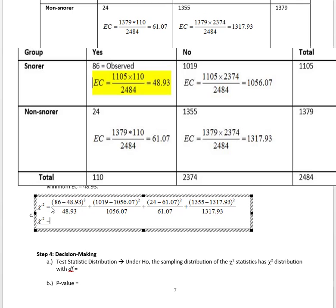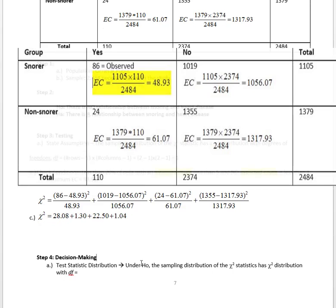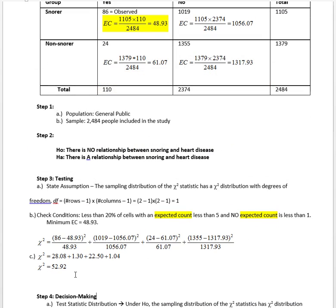After I've done this, I'm going to add all of those values up. I come up with a chi-square test statistic of 52.92. I will then use that to find my p-value in Step 4.